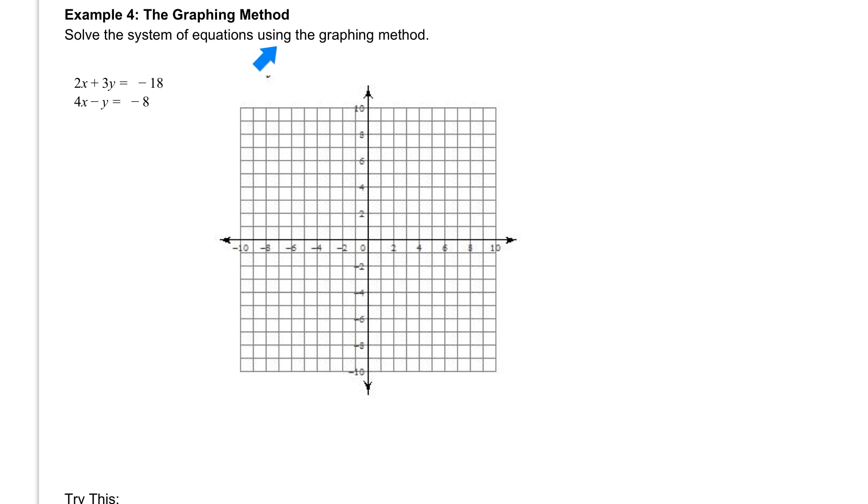In example 4 we're going to solve the system of equations using the graphing method. The only difference from this one in example 3 is that these lines are not given to us in slope intercept form. So we have to go through and solve for y first. So let's start with the first one.